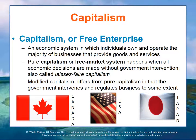Capitalism, or free enterprise, is an economic system in which individuals own and operate the majority of businesses that provide goods and services. Competition, supply and demand — these are the things that determine which goods and services are produced, how they are produced, and how they are distributed. Some of the countries in this category include Australia, Canada, the United States, and Japan.